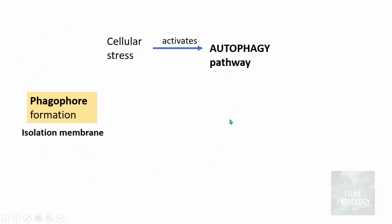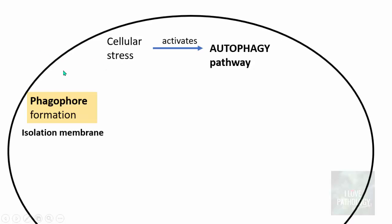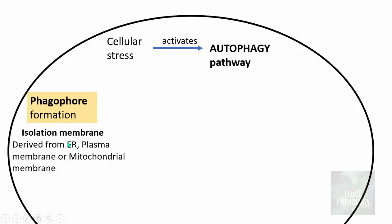Remember, all of these things of autophagy are happening within the cell. This membrane is derived predominantly from the endoplasmic reticulum, or it can be derived from the plasma membrane or the mitochondrial membrane. We will talk about the mechanism in detail a bit later. For now, remember that there is a phagophore formation — it is just a cup-shaped membrane.